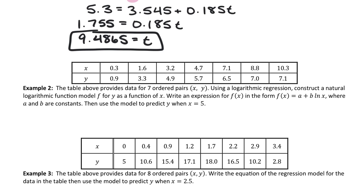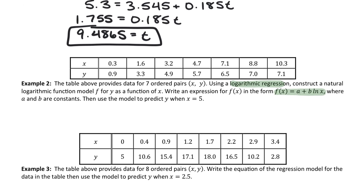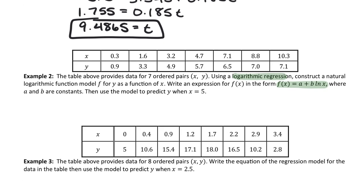Example two. It says the table above provides data for seven ordered pairs using a logarithmic regression, which I know we haven't studied those yet, but we can still read information. Using a logarithmic regression, construct a model for y as a function of x. Write an expression for f of x in the form a plus b times natural log of x, where a and b are constants. Then use the model to predict y when x is equal to five. I honestly want to stop here, and I want to see what you can do.